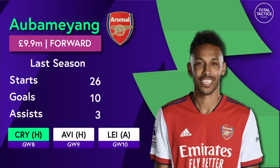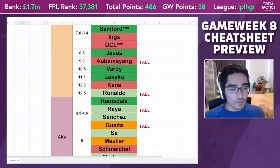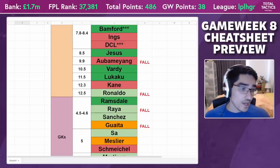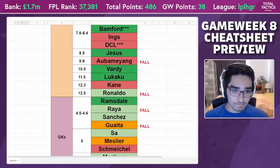Aubameyang has to fall. At his price point you're so close to Vardy, who's shown he's an elite option even in tougher fixtures. Arsenal just aren't building too many chances right now — something I mentioned before the Tottenham game. That game was a key moment where Arsenal were able to blitz a tactically ill-prepared Tottenham, but in many other games including Burnley, not too many chances are being built. You can't justify Aubameyang when Vardy is still getting a lot of chances and is arguably more clinical.